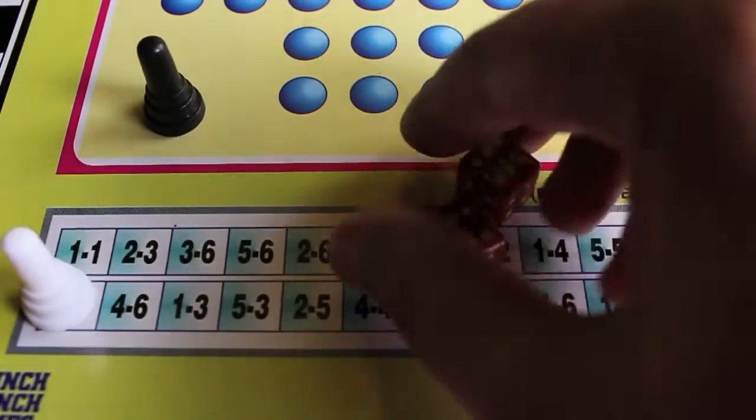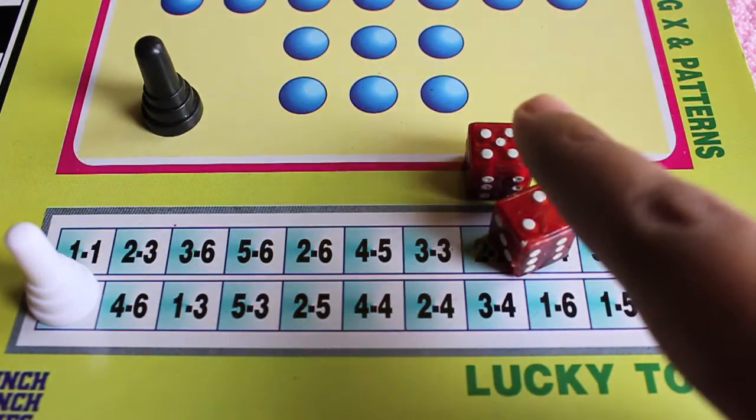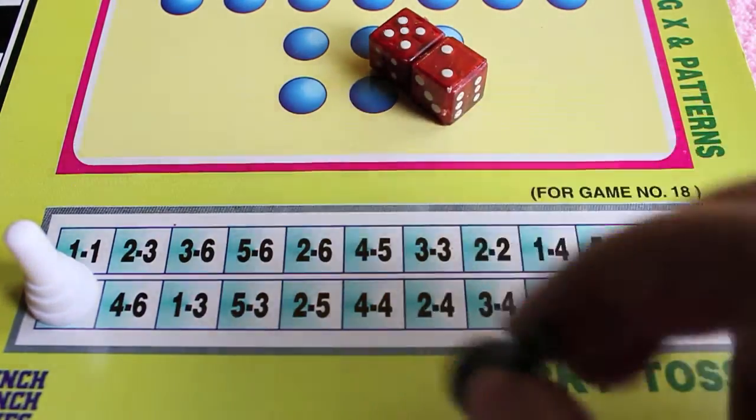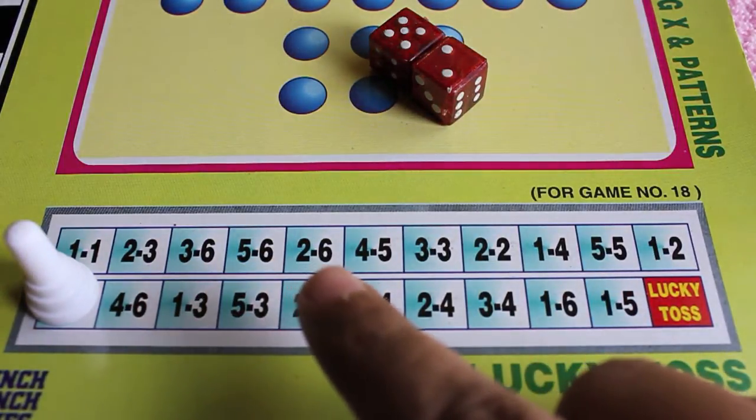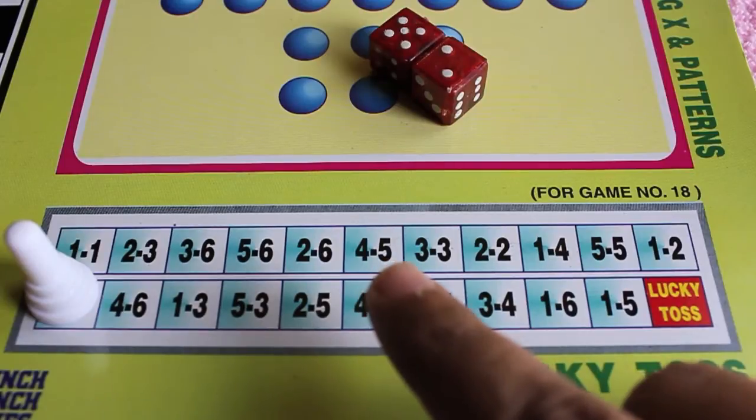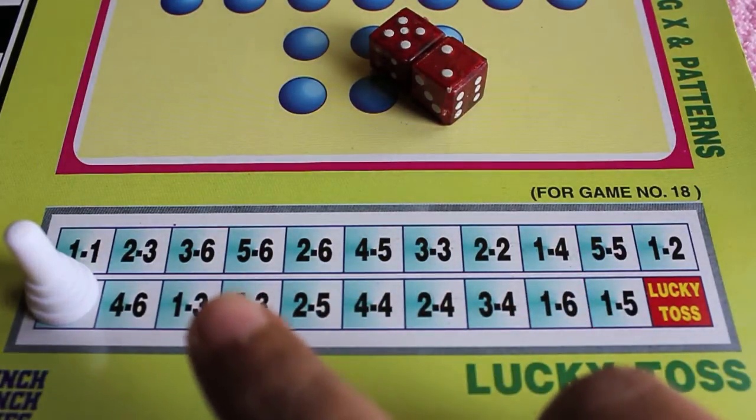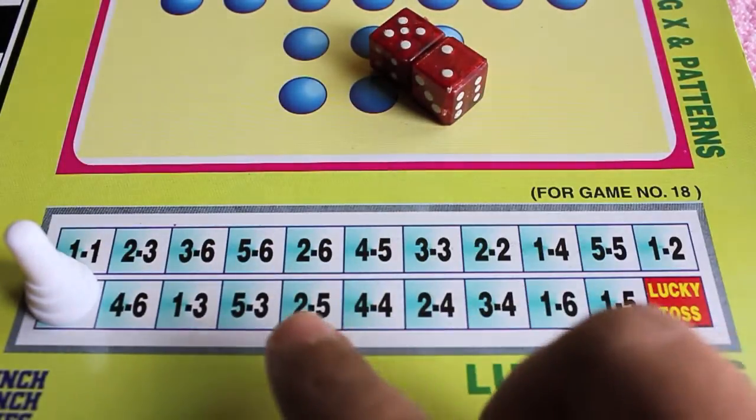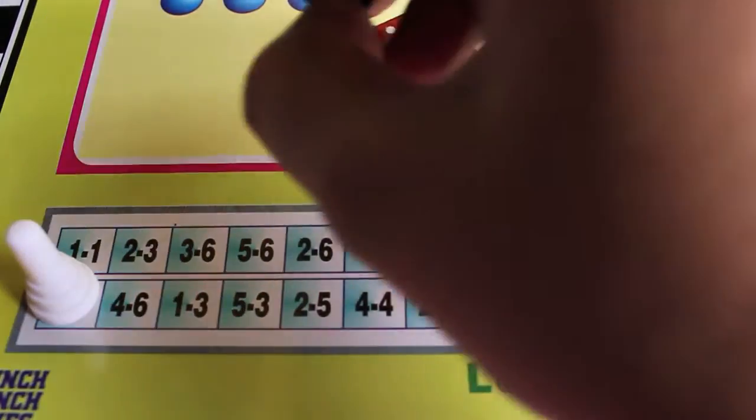You have to use both the dice, so it's like 5-2. You search for 5-2 on the board. As there is no 5-2, we skip and the white player plays again. You cannot use 25, it has to be 5-2, so he skips his turn.